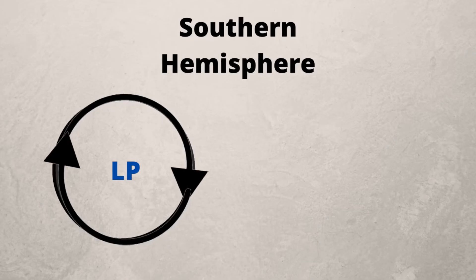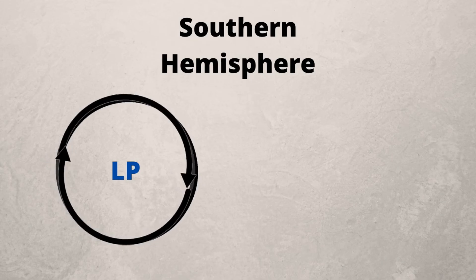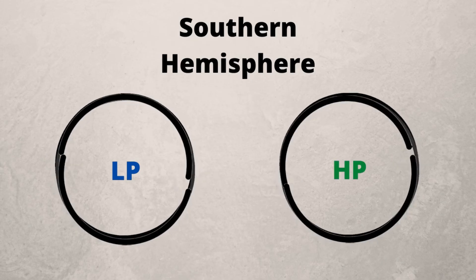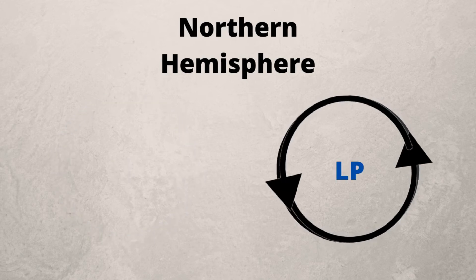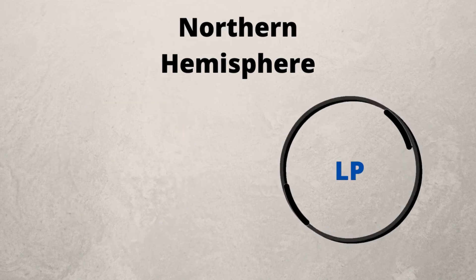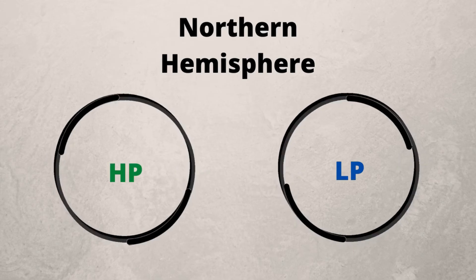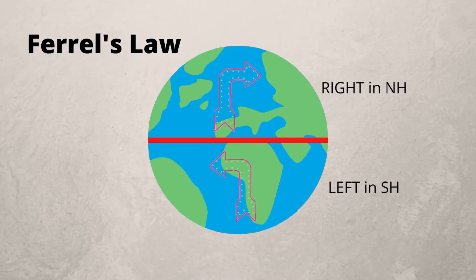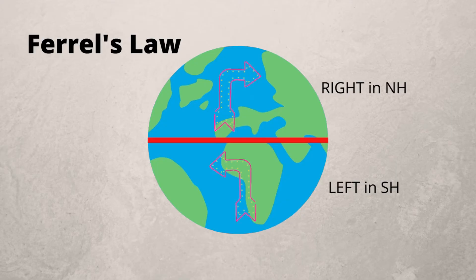When looking at pressure cells in the different hemispheres, they also rotate in different directions. In the southern hemisphere, low pressure systems rotate in a clockwise direction and high pressure systems rotate in an anti-clockwise direction. In the northern hemisphere, low pressure systems rotate in an anti-clockwise direction and high pressure systems rotate in a clockwise direction. This is because of the deflection occurring in each hemisphere — remember, Ferrell's Law states that deflection is to the left in the southern hemisphere and to the right in the northern hemisphere.